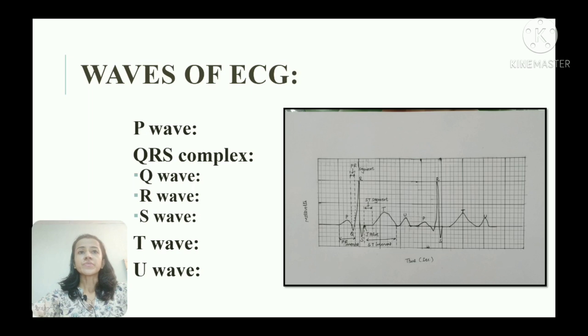Next is U wave, a small rounded positive wave due to slow repolarization of papillary muscles. Duration of U wave is 0.08 seconds and amplitude is 0.2 mV. It is rarely seen normally and if it is prominent, it indicates hypokalemia.